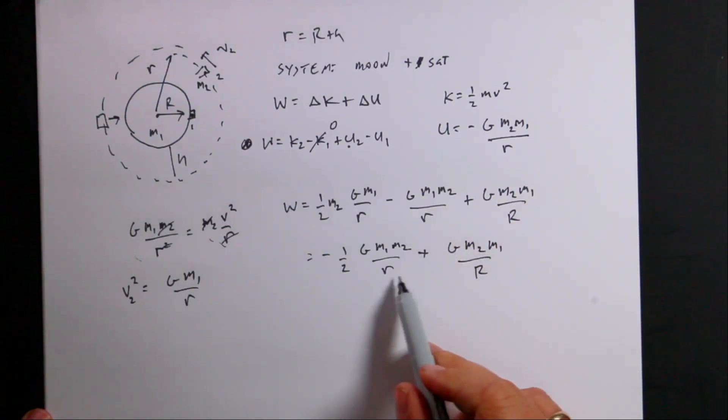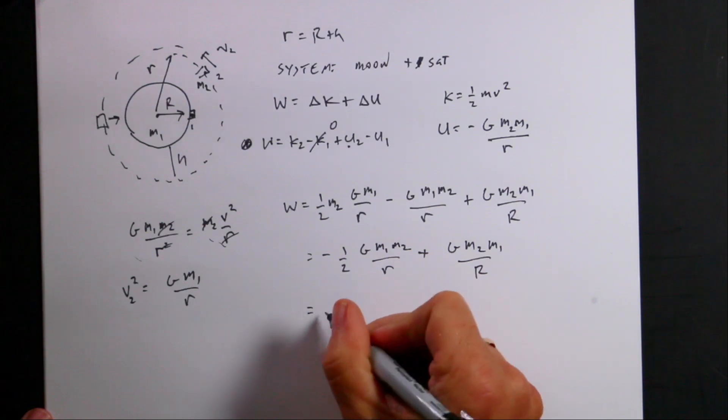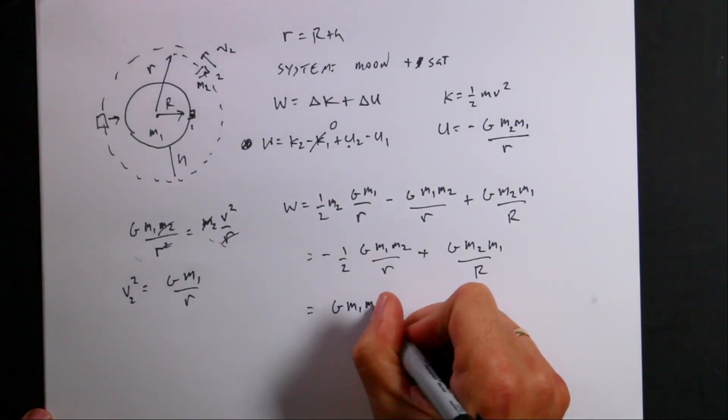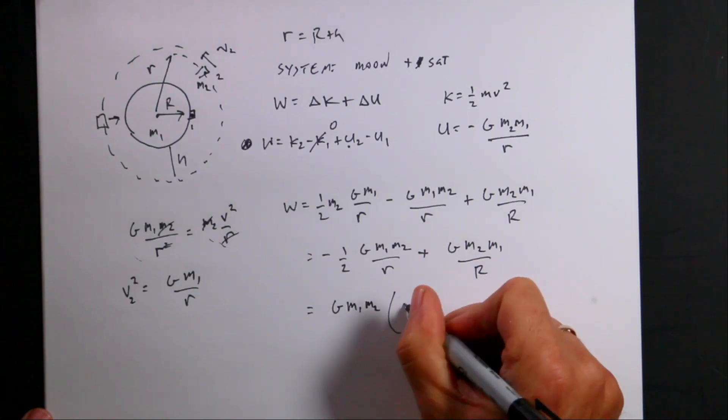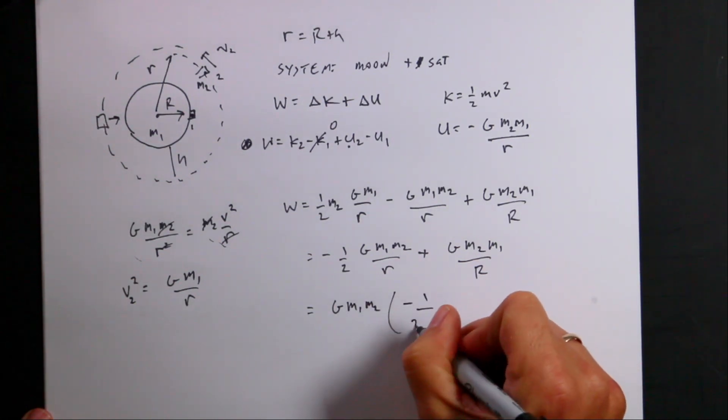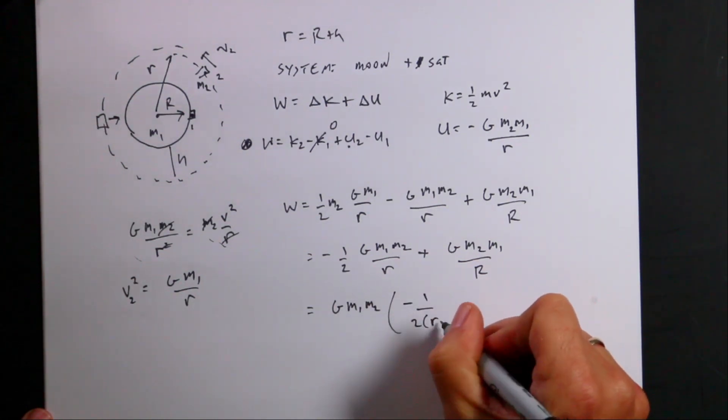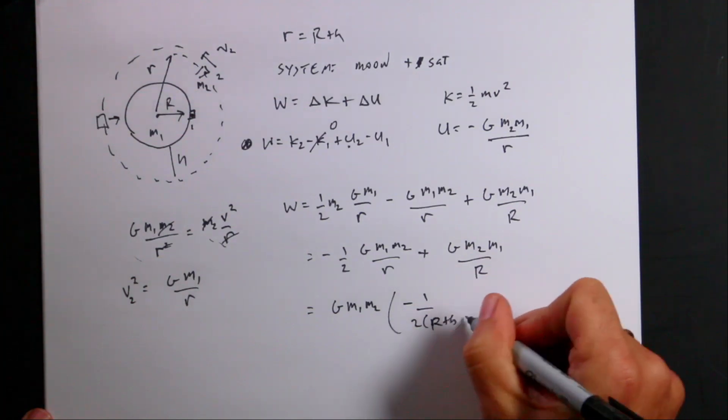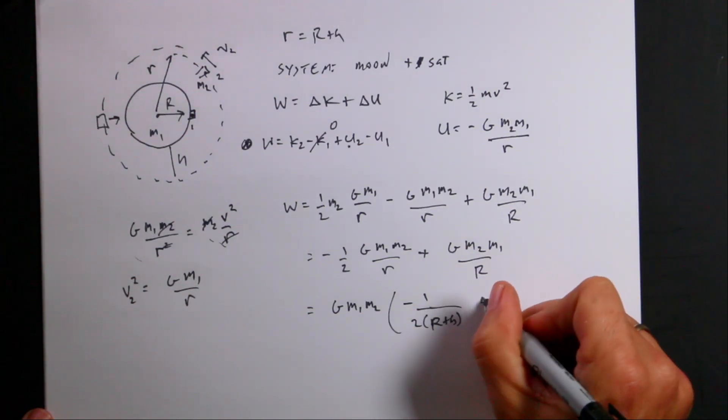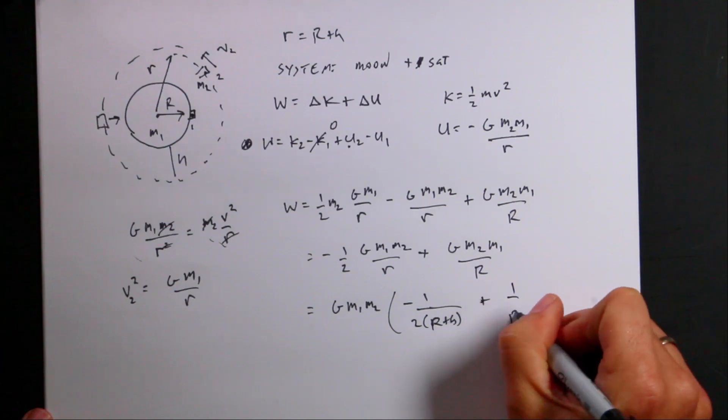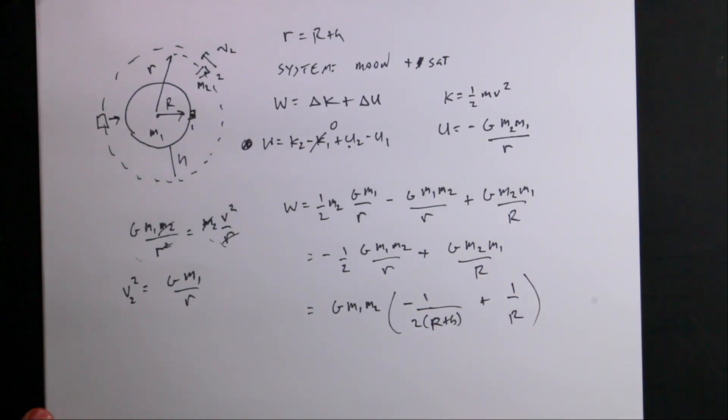Plus g m2 m1 over r. Note that r is different than that, but I can factor this stuff out. So let's put this as g m1 m2 times negative 1 over 2 r, big r plus h, I'll write it out, plus 1 over r. Okay, let's put in our values.